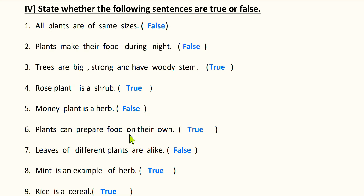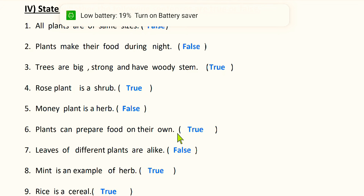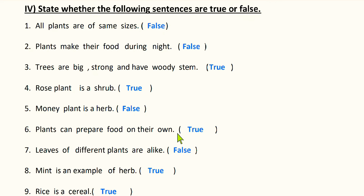Plants can prepare food on their own — true. We depend on plants and animals, but plants can prepare their own food. Next: leaves of different plants are alike — false. Alike means same. Different plants have different size and shape of leaves, so leaves of different plants are not the same — they are of different shapes and sizes.